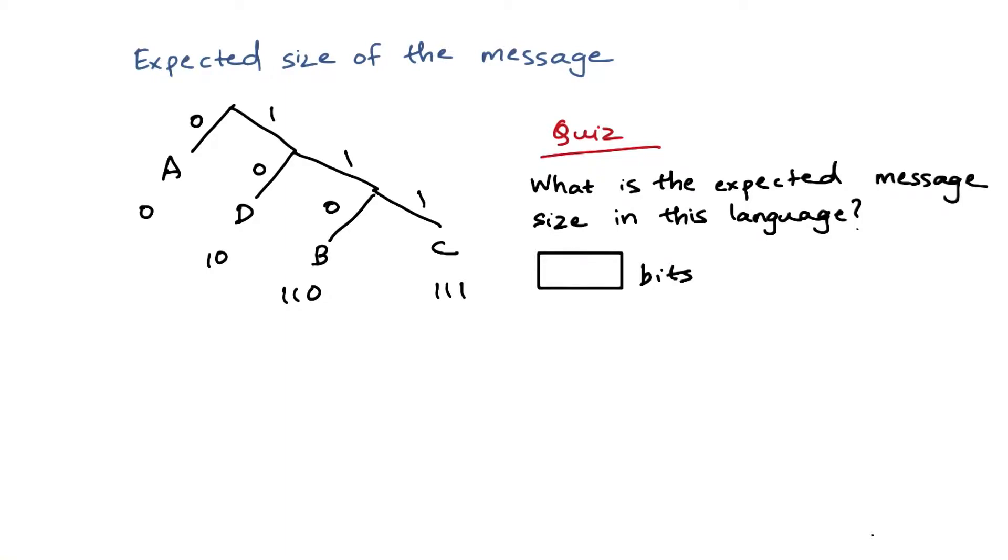So how will you work this out? You will need to know the frequency of A, B, C, and D. We already know that. You will also need to know how many bits each of those symbols require. We also know that.